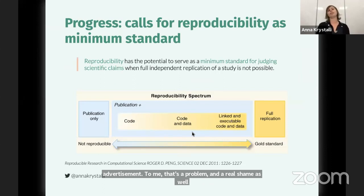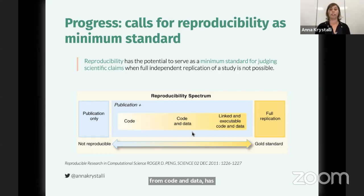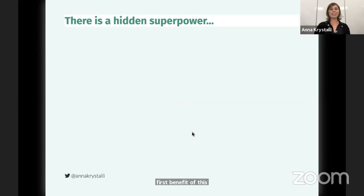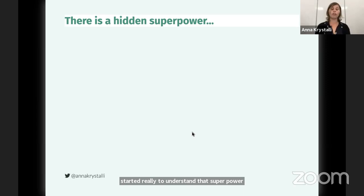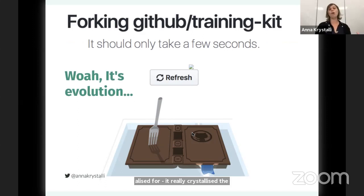There has been progress in computational reproducibility. The ability to reproduce a result from the same code and data has been proposed as the minimum standard for judging a scientific claim, and I think that's a really good start. That speaks to the first benefit of transparency, which is verification. But there is a hidden superpower. I only started to really understand that superpower when I started learning more about open source and version control and Git, and in particular through the Mozilla open leadership training program, of which I was a member of the first cohort. It really crystallized for me the first time I made a fork of an online repository — I thought: wow, it's evolution.